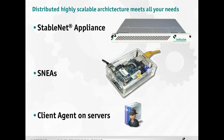The distributed highly scalable architecture of StableNet meets all your needs. We have three different kinds of agents. First, the most powerful solution is the StableNet appliance — you can install the middleware and database there, giving you a full solution in one application. Additionally, you can have the SNIA agents, which can be placed in all your locations to provide end-to-end user experience measurement for all users in every location. Last but not least, we also offer the possibility to install the client agent on servers — this is sometimes required if you want to monitor services which don't provide information via a standard protocol and are only accessible on the local device.